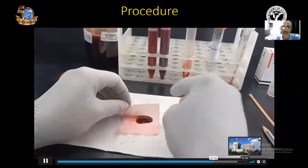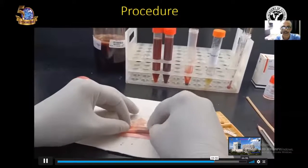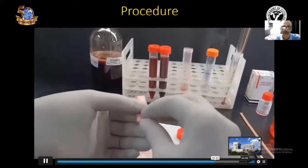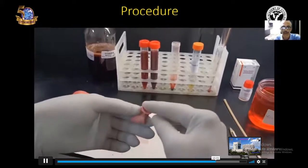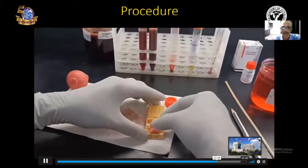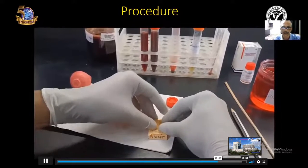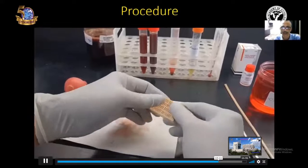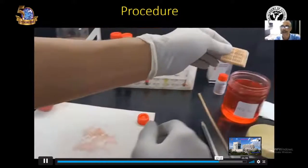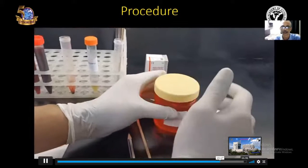The next step is wrapping the sediment with the wet filter paper. Slowly wrap carefully and keep it inside the tissue cassette and lock the tissue cassette securely. Lock it tightly and put inside the neutral buffered formaldehyde fixative.